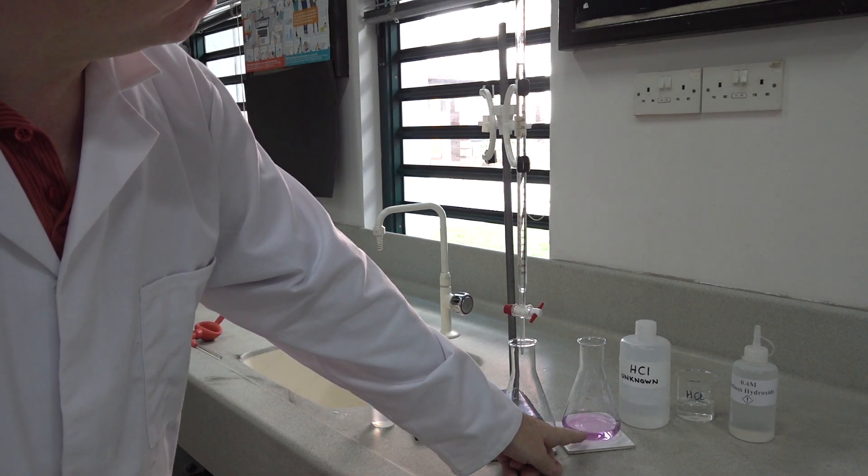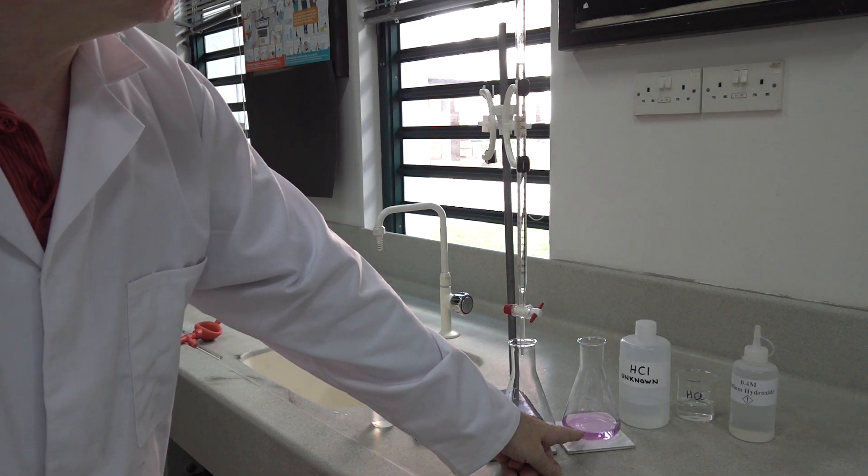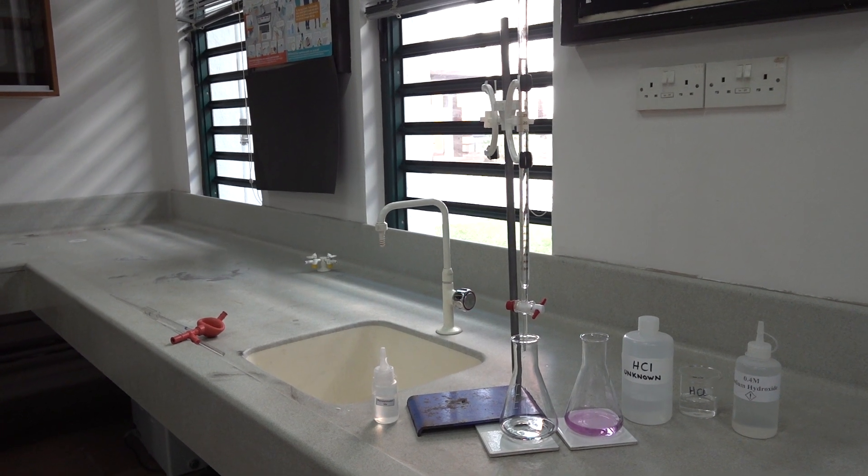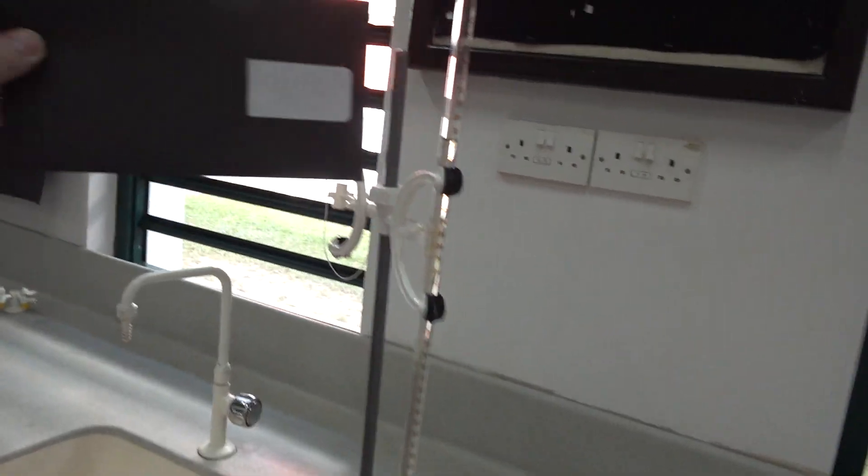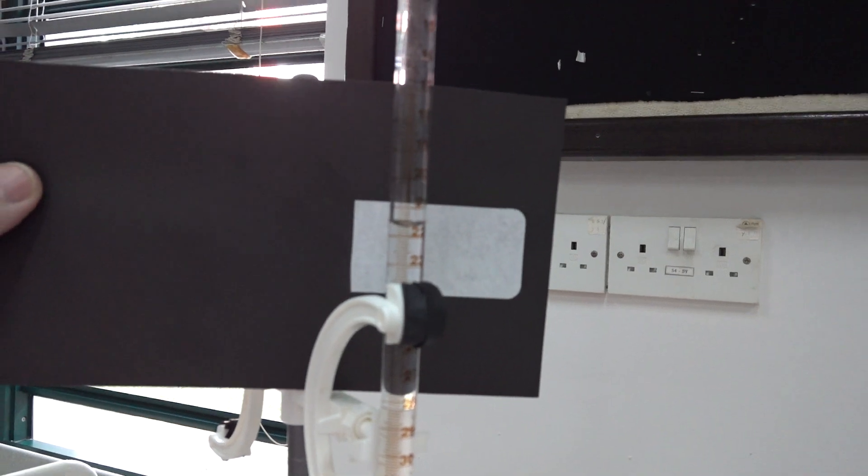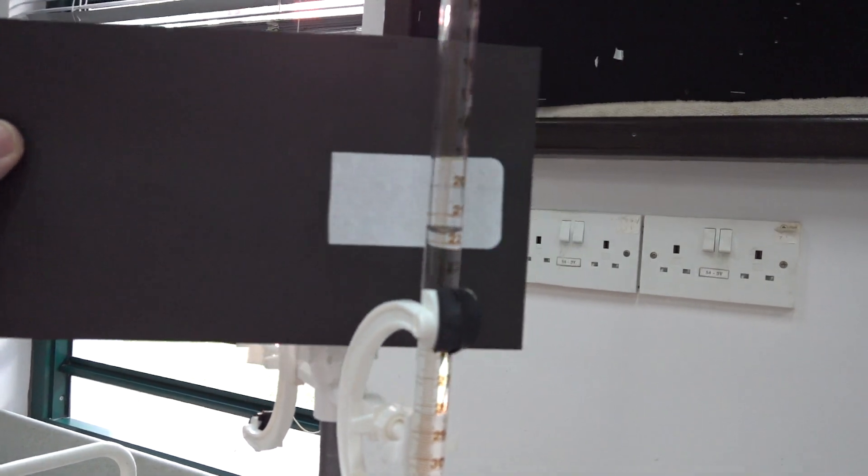We've already done a rangefinder, our first titration, which gave us a result of 21.7. We need to take a starting reading on the burette here. You should be able to see that is indeed where we finished off last time: 21.7 centimeters cubed.